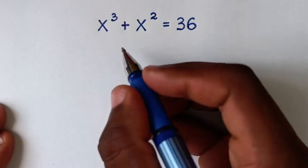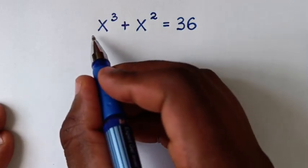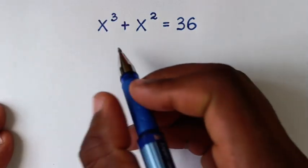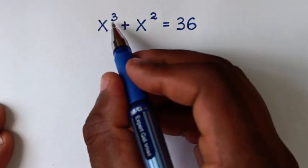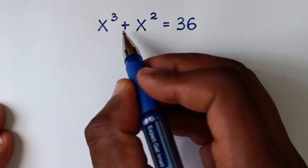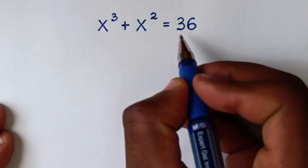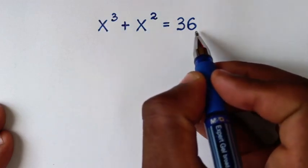Hello, you are welcome to solve this math problem, which is x power 3 plus x power 2 is equal to 36.